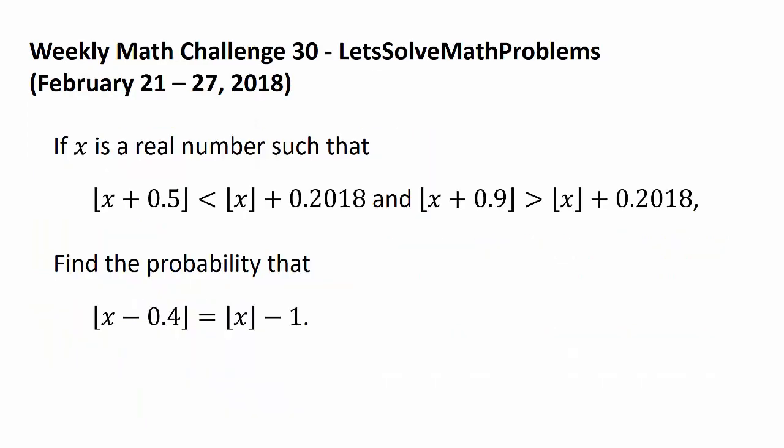And now it's time for this week's challenge. If x is a real number such that floor of (x + 0.5) is less than floor of (x + 0.2018), and floor of (x + 0.9) is greater than floor of (x + 0.2018), find the probability that floor of (x − 0.4) is equal to floor of (x − 1).